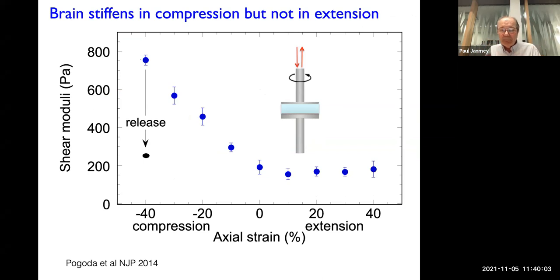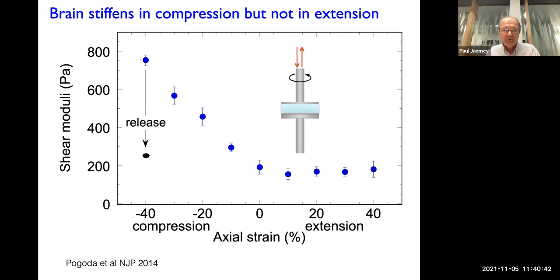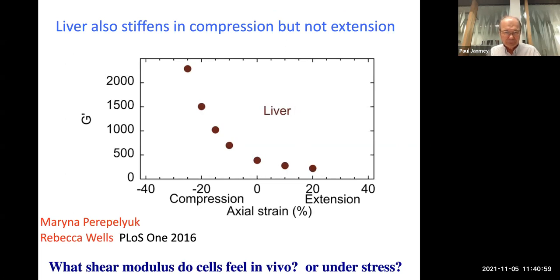Something interesting happens. If you take brain or other tissues and measure the stiffness, it does not happen in extension. If we stretch a piece of brain to positive strain numbers, stretching a brain does not change its shear modulus. But compressing it does make the brain stiffer - actually a lot stiffer. It's a reversible elastic response: if we first compress it uniaxially to give it a high shear modulus and then return it to its resting height, the modulus drops back to where it used to be. These are not unrealistic strains, and it also happens in liver. It happens in every soft tissue we've looked at - they all get stiffer when you compress them than when you stretch them.